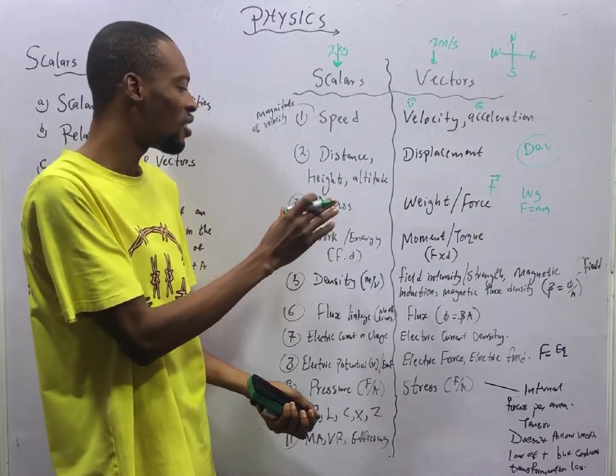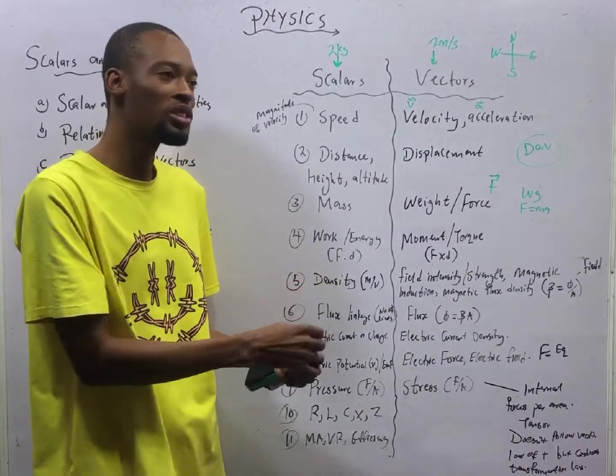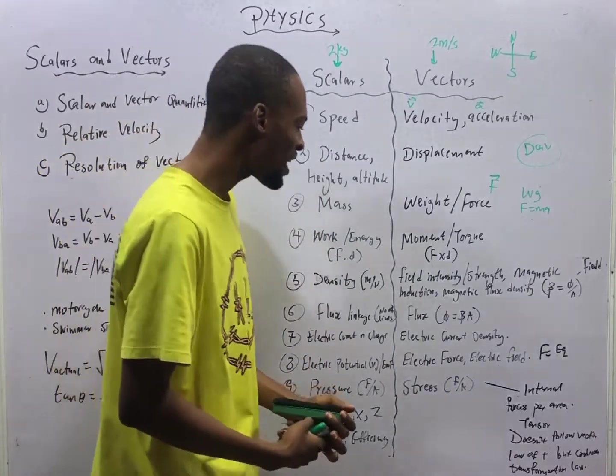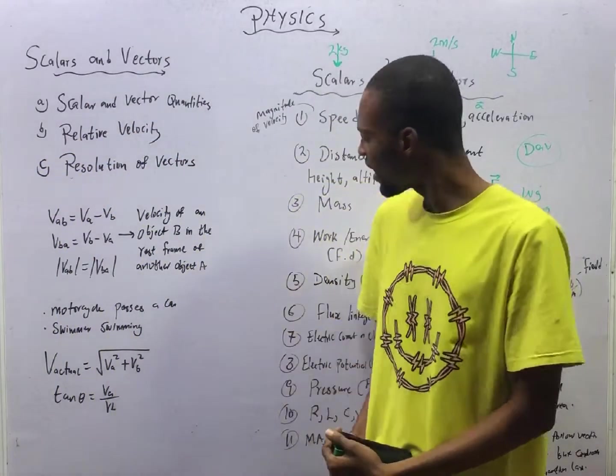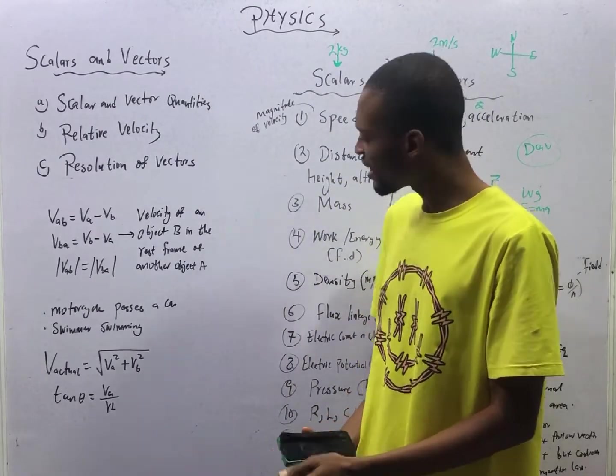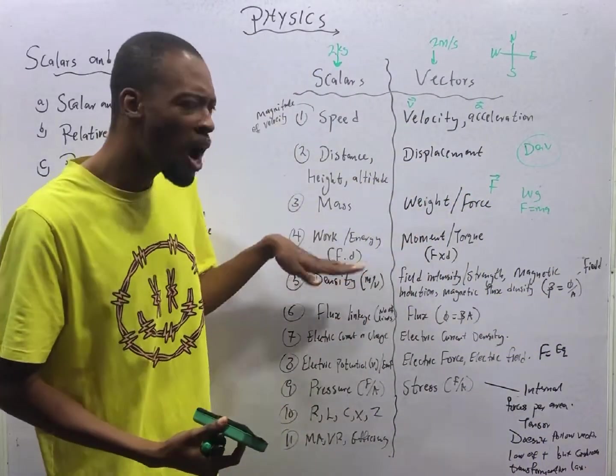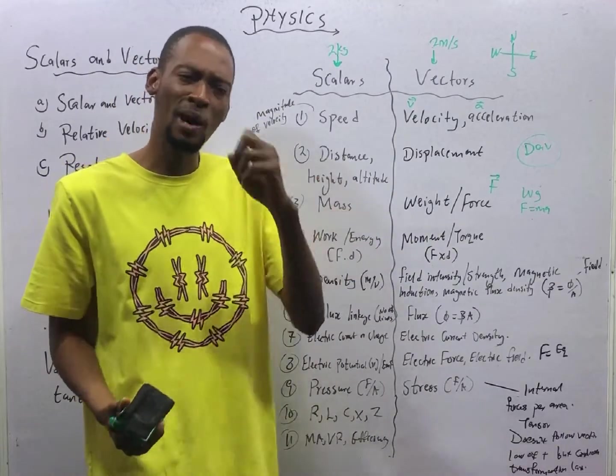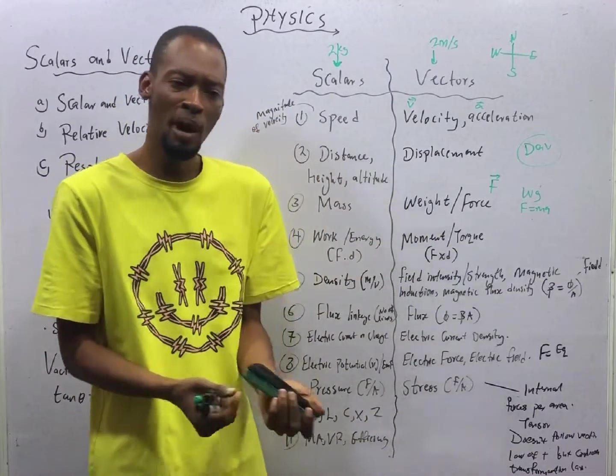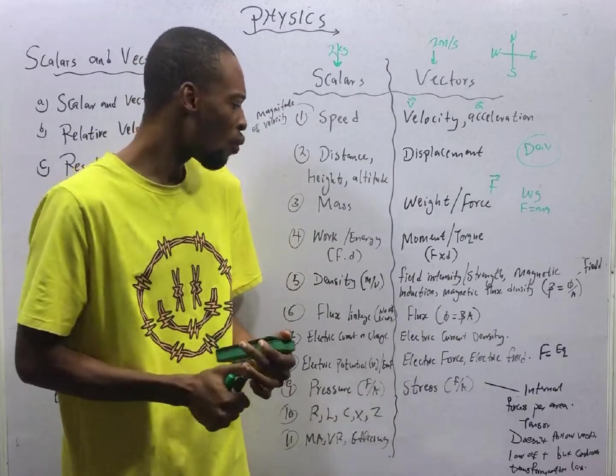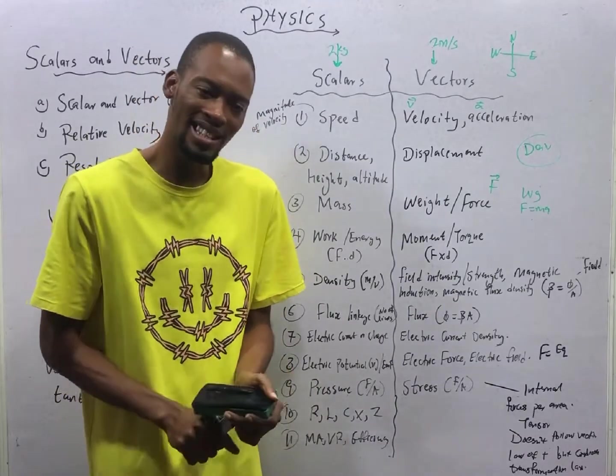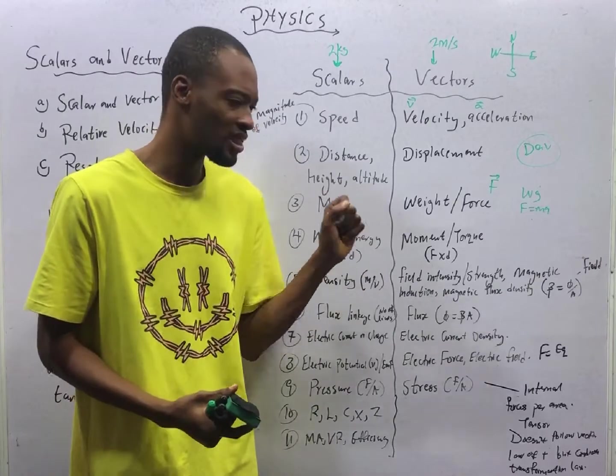Work done or energy, they are scalar quantities. You may be wondering, where is work or energy, scalar quantity, when it has force in it? Work done or power, power is also a scalar quantity. Power is time rate of doing work. Work done is force times distance. The scalar product of force and distance.